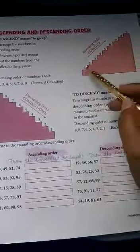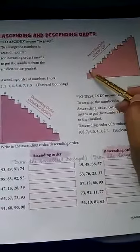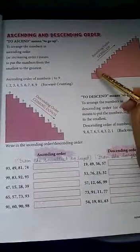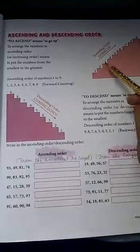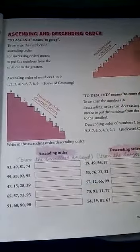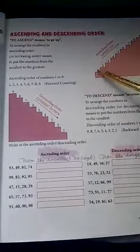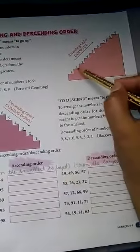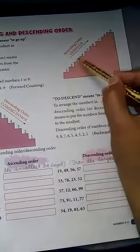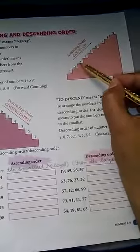For example, this is the smallest: 1, 2, 3, 4, 5, 6, 7, 8, 9 going up. This means numbers arranged smallest to greatest. The smallest number is 1, then 2 is bigger than 1, 3 is bigger than 2, and 4 is bigger than 3.